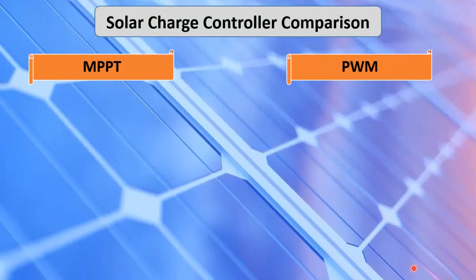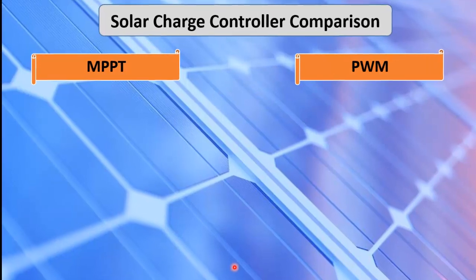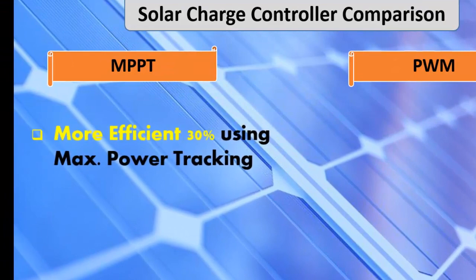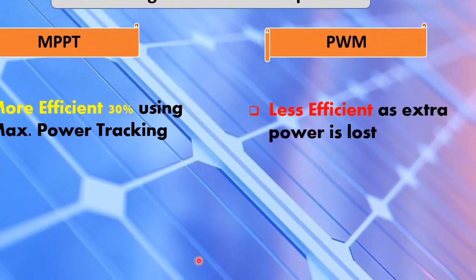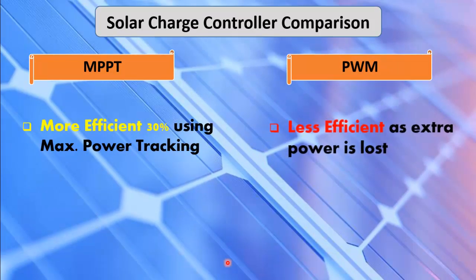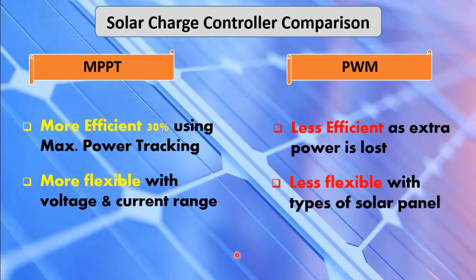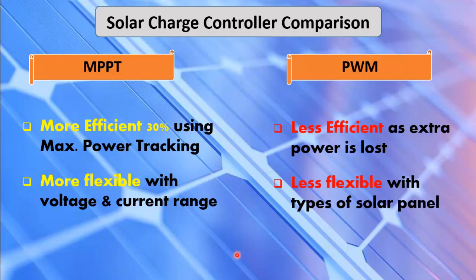Let's quickly compare MPPT and PWM solar controllers. As seen previously, MPPT is 30 percent more efficient in terms of power conversion, whereas PWM is less efficient as extra power is lost. MPPT is compatible with a wide range of solar panels because it can convert voltage and current according to the load. PWM controller is less flexible as it must be selected carefully according to the battery voltage. MPPT is more expensive than PWM, but it can quickly recover its price because of higher efficiency.